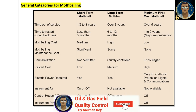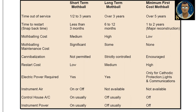There are general categories of mothballing: short-term mothball, long-term mothball, and minimum first cost mothball. Short-term covers a service period of half a year to three years. Long-term is over three years. Minimum first cost mothball is for systems over five years. In terms of time to restart: less than three months to restart is short-term; six to twelve months is long-term; one to two years after major reconstruction is minimum first cost mothball.